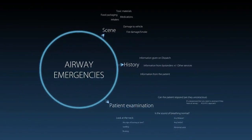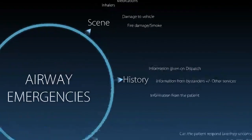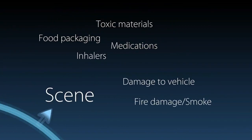The first thing we're going to talk about is airway emergencies. The approach is to look at the scene to ascertain information, then take a history, and then examine the patient. When assessing the scene, you can look for information on both trauma and medical patients. For the airway, look for fire damage or smoke, which could indicate airway swelling, or damage to a vehicle around the neck area. Also look for inhalers, medications, toxic materials, or food packaging that could suggest choking or an allergic reaction.